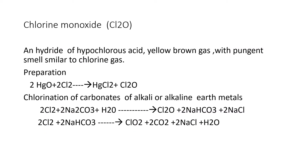Now come to Preparation of Chlorine Monoxide, Cl2O. If you look at its physical properties, it is anhydride of hypochlorous acid. As you have already come across, anhydride is nothing but when an oxy acid is subjected to dehydration, the leftover or resultant oxide is known as anhydrous. Anhydride or anhydrous. So it is anhydrous of hypochlorous acid.